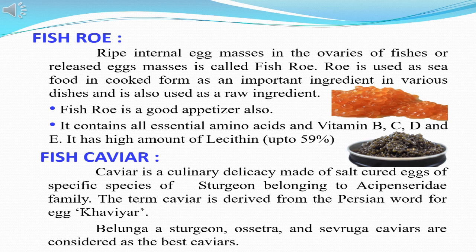Sometimes fish roe and fish caviar are mistakenly taken as one, but these two are very much different. Fish roe is prepared from ripe internal egg masses in the ovaries of various fishes which are released, and it is highly used as an appetizer. It contains essential amino acids in addition to vitamins B, C and D. Whereas fish caviar is a culinary delicacy made of salted, cured eggs of a specific species of sturgeon belonging to the family Acipenseridae.